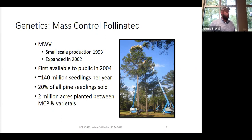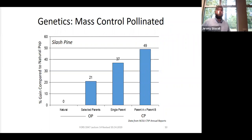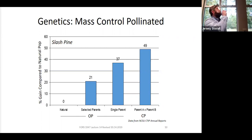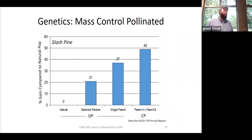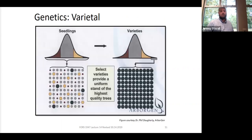MCP stands are really, really uniform. When you see them, you might think it's a varietal stand. The form is great, they're disease resistant, and they're using only the best genetics. Natural unimproved pine has no genetic gain as a baseline. A good open-pollinated mother tree gives about 21% volume gain. Taking the single best parent in the orchard may give a 37% volume gain. But if you take the best two parents, cross them, and confirm they work well together, you may get about a 50% increase in volume — with good volume, good form, and good disease resistance.